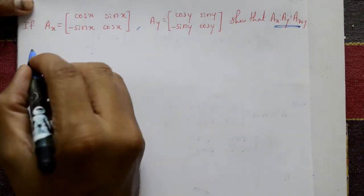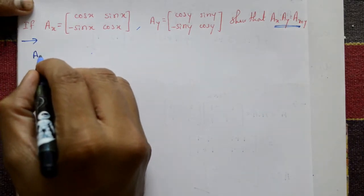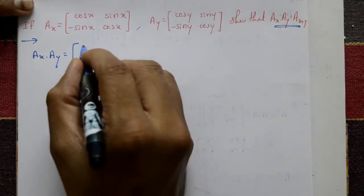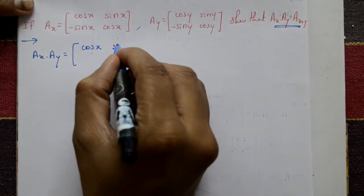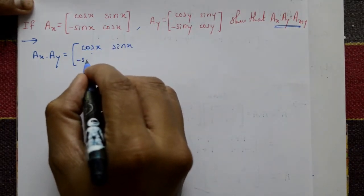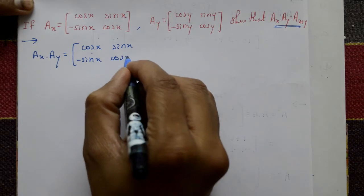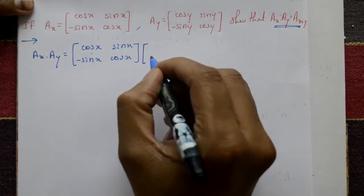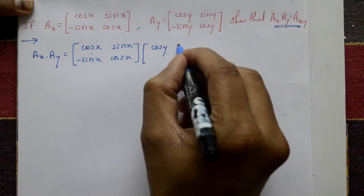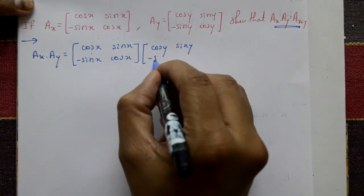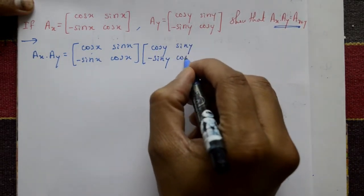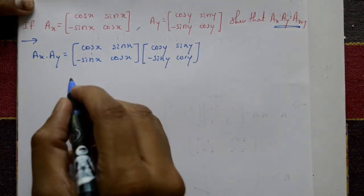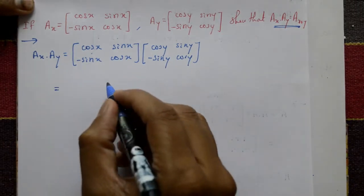Now for the solution, we take A(x) into A(y). First we write matrix A(x) with first row [cos x, sin x] and second row [-sin x, cos x], multiplied by A(y) which is [cos y, sin y; -sin y, cos y]. Now we perform the matrix multiplication of these two matrices.